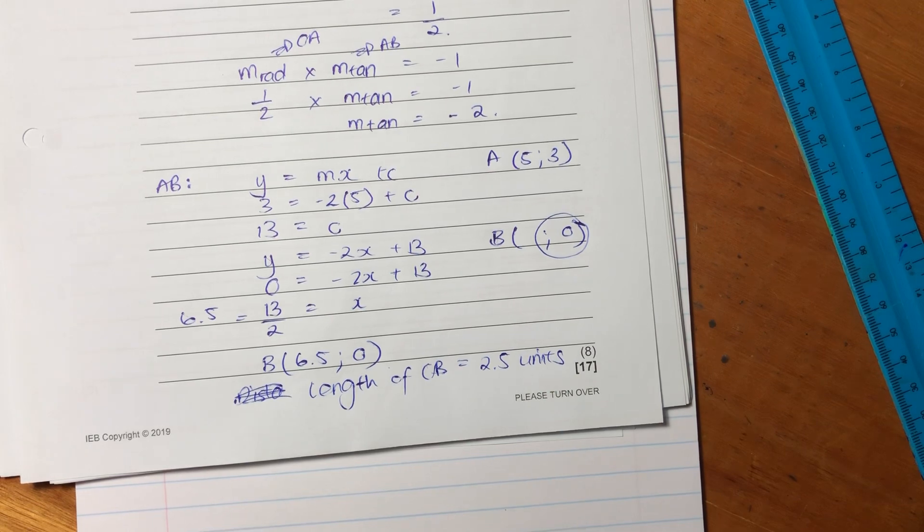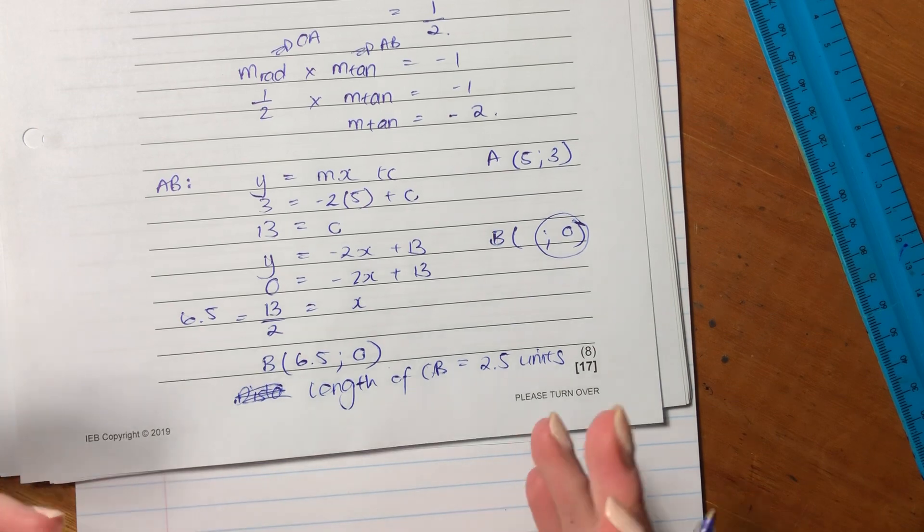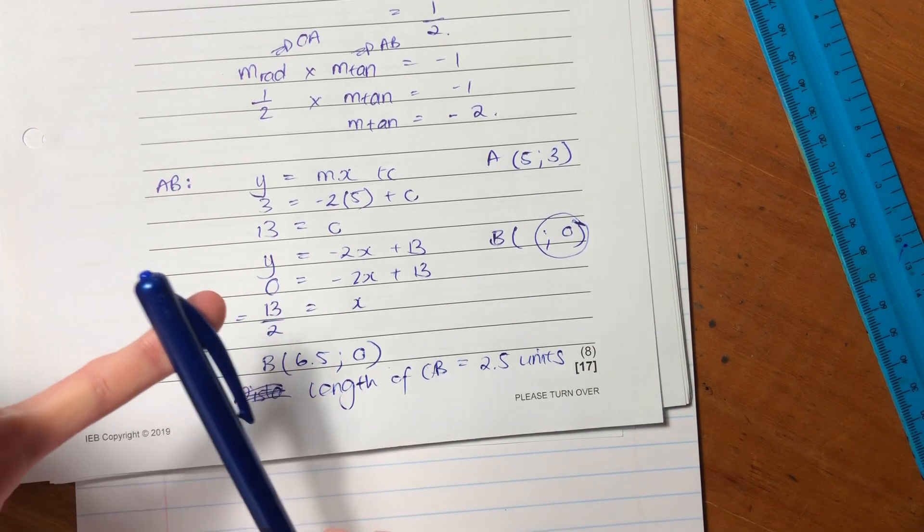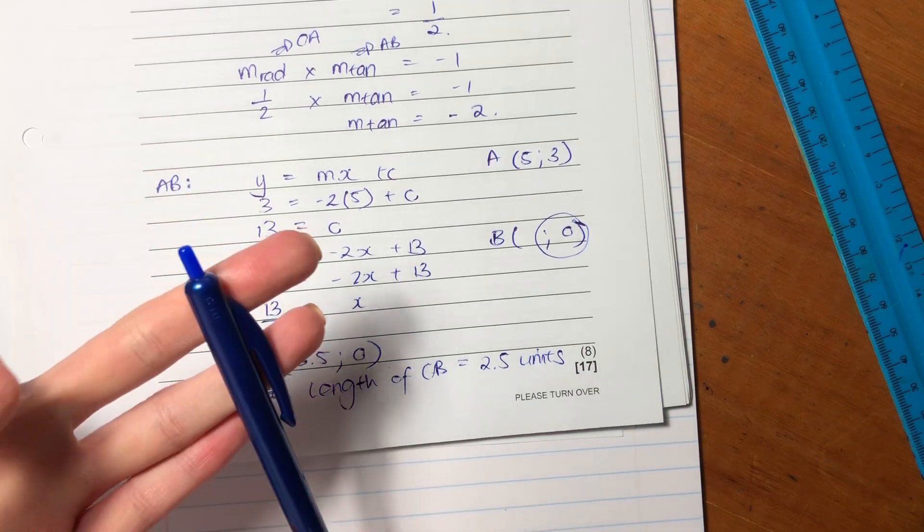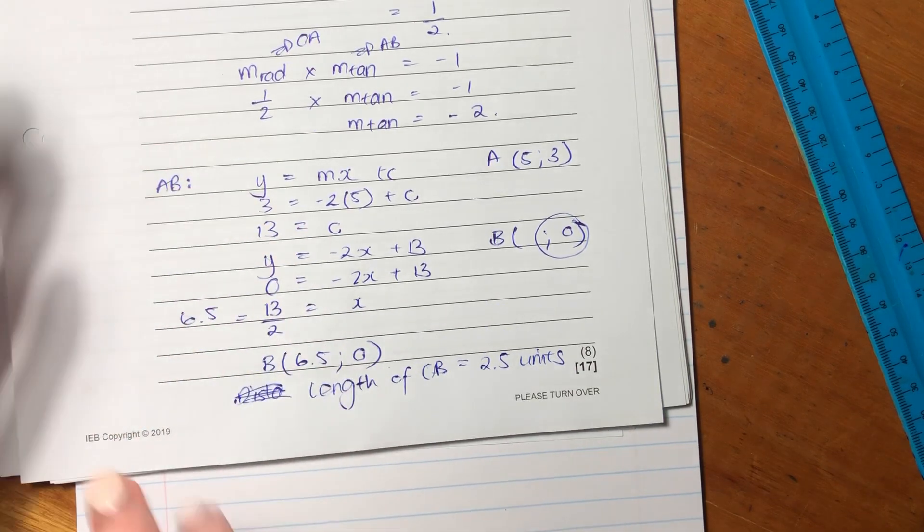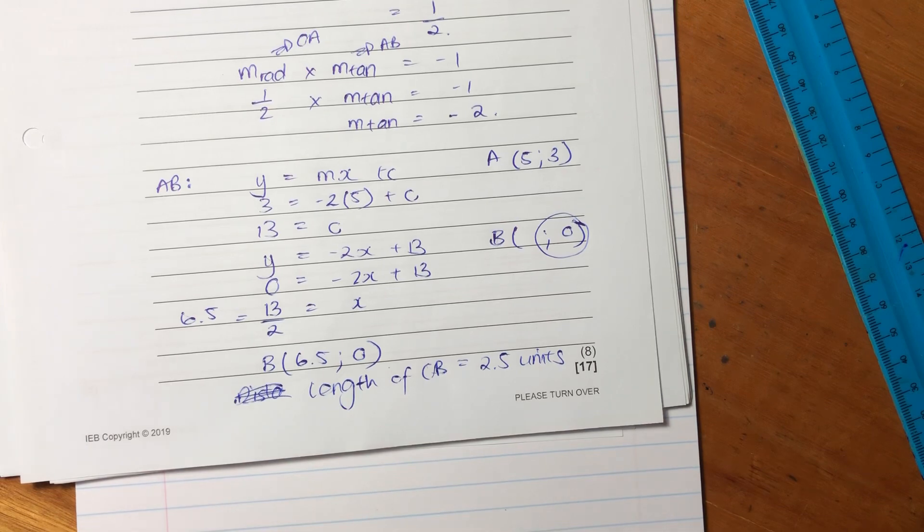So that's the end of this question. I hope that was helpful. Really interesting question, that. Also a really good question to look over because it tells us we need to revise our completing the square. We need to remember gradients. We need to remember gradients with a radius and a tangent, and then also just our straight lines. So this draws on a lot of different areas of competency. I'll move on to question 10.